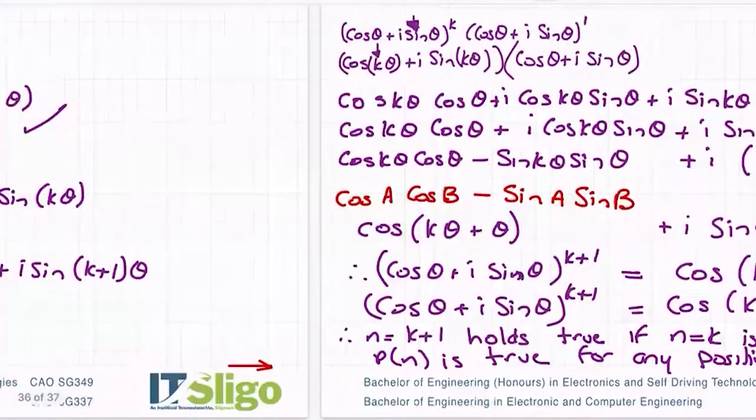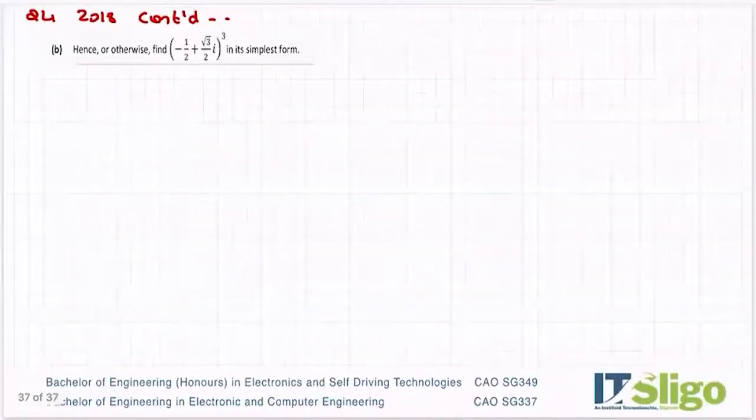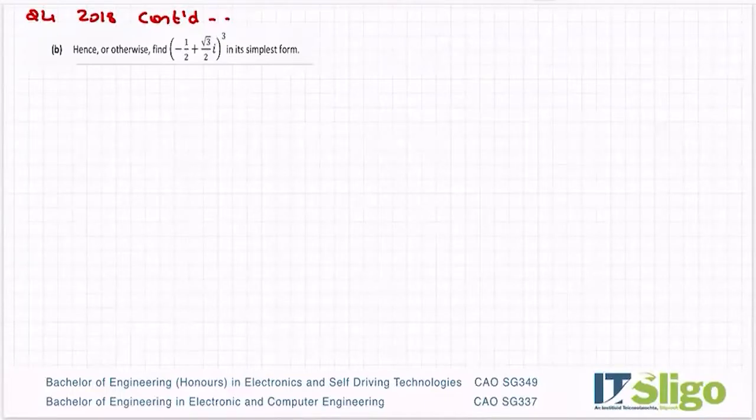And so the last time that came up was, I believe, 2018. Part B of that question, then, hence or otherwise, find minus a half plus root 3 over 2i to the power of 3 in its simplest form. So we've just proven that De Moivre's theorem is true. Now we're going to use it.